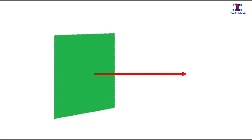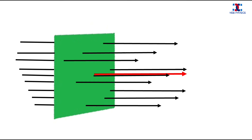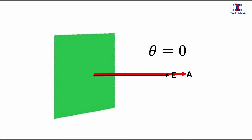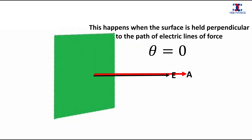Now let us consider a next case where the plane surface is kept perpendicular to the path of electric lines of force. In this case, you see that the direction of the area of the surface — that is, the red arrow line — and the direction of the electric field are parallel. So in this case, the angle theta is 0, and this happens when the plane surface is kept perpendicular to the path of electric lines of force.